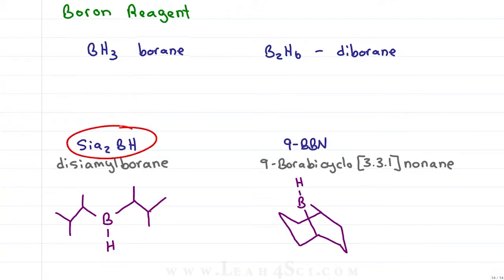Memorize one reagent for when you're asked to provide it. I recommend disiamyl borane and then for the rest, if you're given the reagent, just look for the boron. If you see an alkyne reacting with some crazy boron reagent, you're probably looking at a hydroboration reaction.